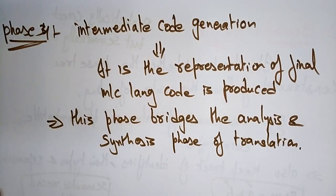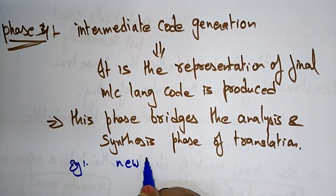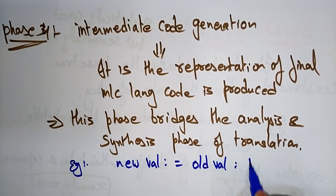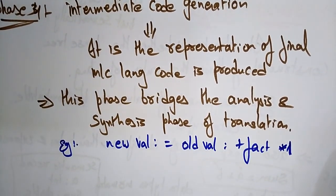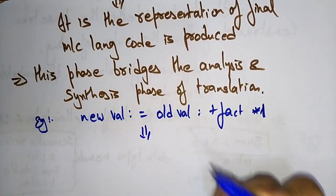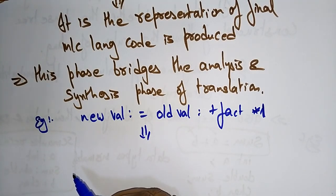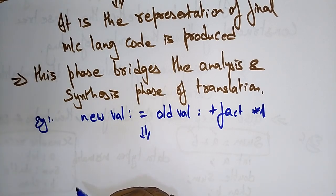Let me explain with an example: new_value = old_value + fact * 1. The intermediate code generator processes this equation. So far we have tokens, then a parse tree, then semantic analysis checks whether it is following the correct rules. Now the intermediate code generator converts this high-level language into low-level machine-dependent code.